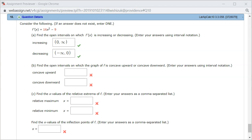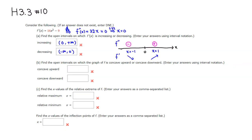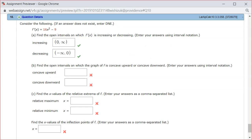Let's look at part B: find the open intervals on which the graph of f is concave upward and concave downward. Concave upward means f double prime is positive, and concave downward means f double prime is negative. Looking at the sign chart, the second derivative is positive starting from 0, so concave up on 0 to infinity, and the second derivative is negative before 0 — exactly the same answer as part A.